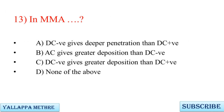Question 13: In MMA — A. DC negative (DCEN) gives deeper penetration than DC positive (DCEP). B. AC gives greater deposition than DCEN. C. DCEN gives greater deposition than DC positive. D. None of the above.